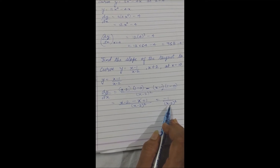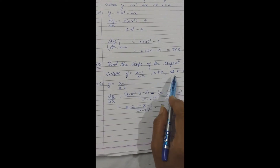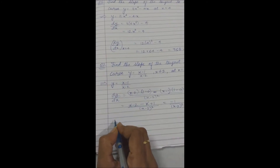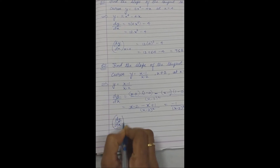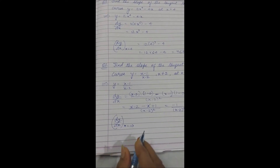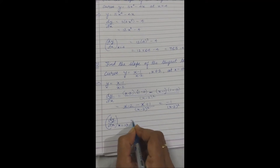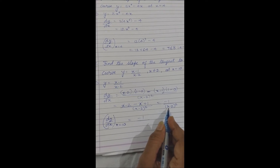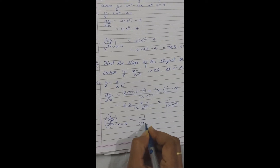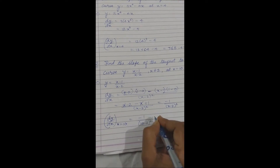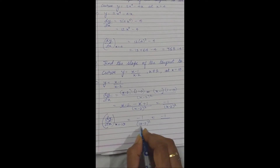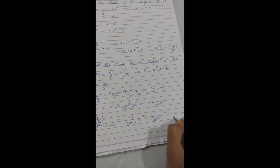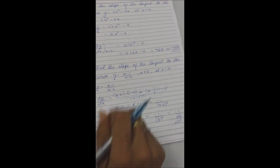We will not expand (x minus 2)² because ultimately we have to find the slope at x = 10. So we directly put: dy by dx at x = 10 = minus 1 upon (10 minus 2)² = minus 1 upon 8² = minus 1 upon 64. This is the slope for this question.